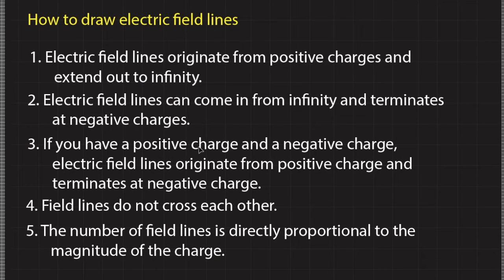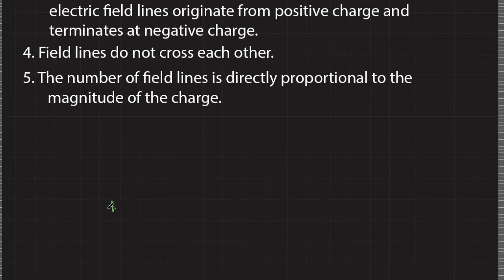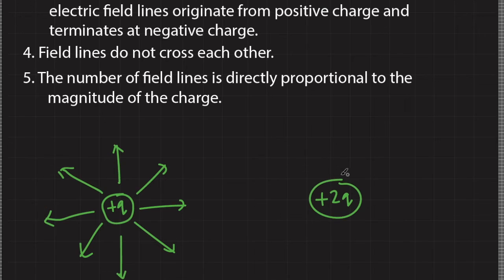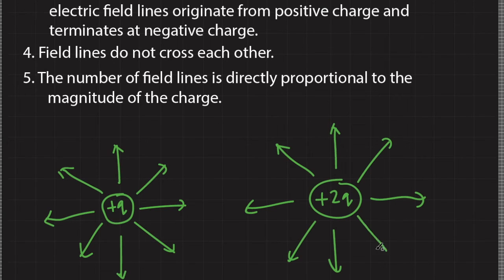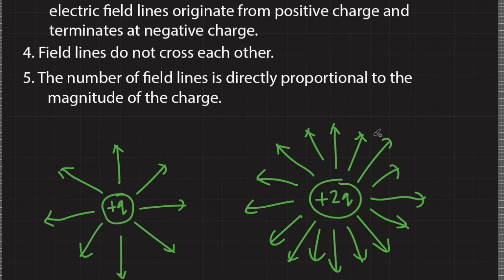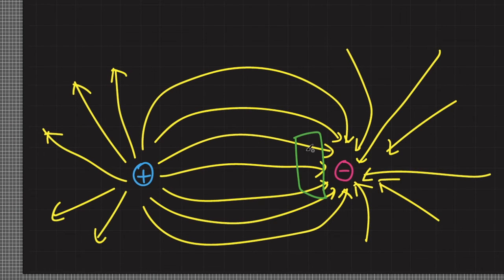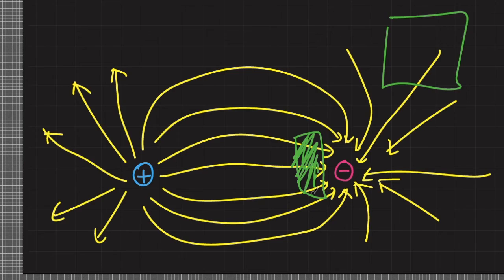Rule number five: the number of field lines is directly proportional to the magnitude of the charge. For example, a charge of positive Q can be represented with eight electric field lines, while a charge of positive 2Q would be represented with sixteen electric field lines. The magnitude of the field also depends on field line density — a region with greater density has a greater electric field magnitude.